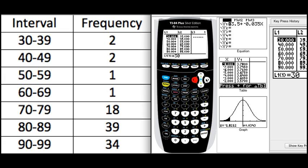Now, on L1, what I want you to do is to put all the lower intervals: 30, 40, 50, 60, 70, 80, and 90. And on L2, I want you to do the higher intervals: 39, 49, 59, 69, and so on.